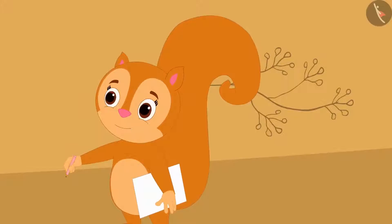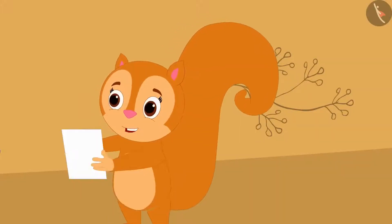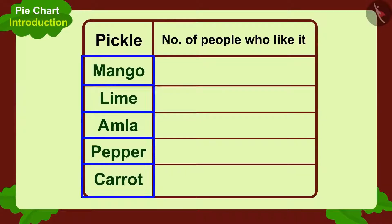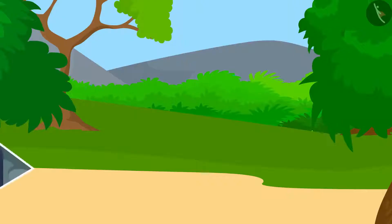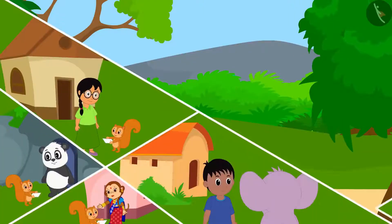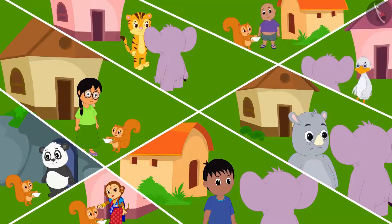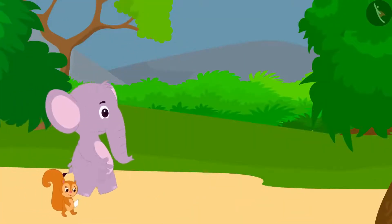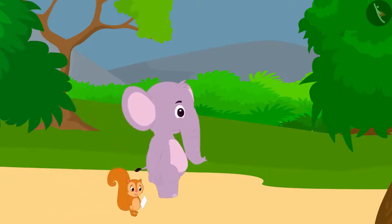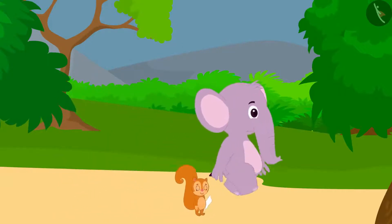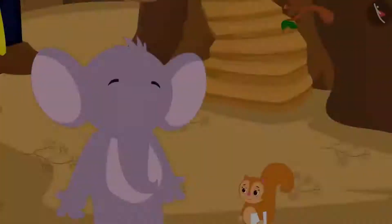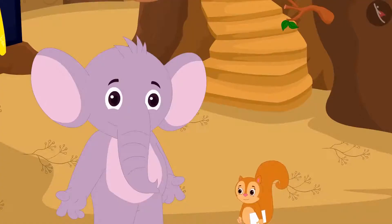Appu says, 'I will write down the names of some pickles on a paper, then we will write the number of people who like that pickle in this table.' Chanda and Appu go to people's homes to find out which pickle people like. By the end of the day, they completed their table by asking a hundred people their choice. They returned to Chanda's house.